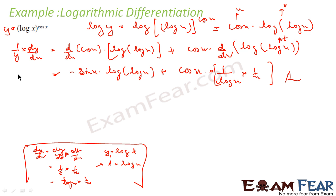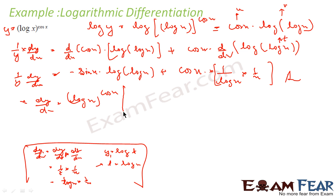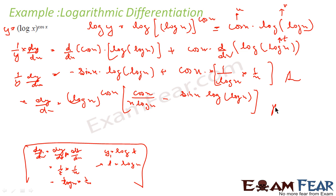So 1 by y times dy by dx equals minus sin x times log(log x) plus cos x times 1 by (x log x). Therefore dy by dx equals y times this, and y is (log x) to the power cos x. So dy by dx equals (log x)^(cos x) times [cos x by (x log x) minus sin x times log(log x)]. And that is my answer.